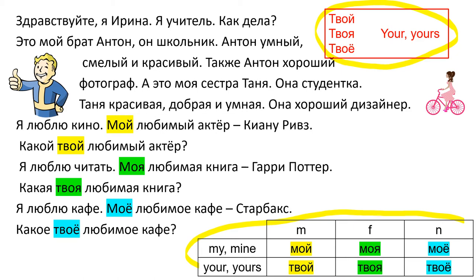Твой, твоя, твоё. Just change м to тв: мой — твой, моя — твоя, моё — твоё.